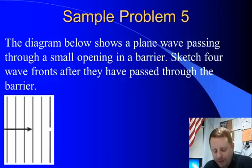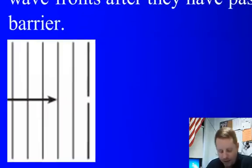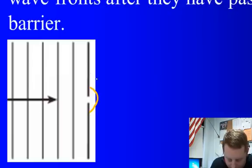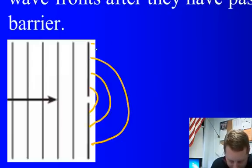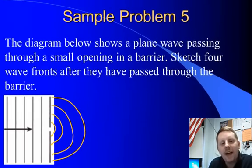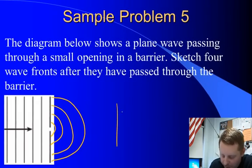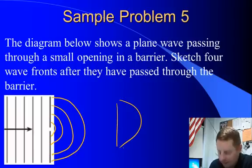One last problem here. The diagram below shows a plane wave passing through a small opening in a barrier. Sketch 4 wave fronts after they have passed through the barrier. Okay, the wave is coming from the left. We have a narrow opening, so it's going to behave almost like a point source. So we could draw our wave fronts something like that. And interestingly, if you have the wave coming from the left through an opening, it almost makes the shape of a letter D. D for diffraction, perhaps. Maybe that'll help you remember.